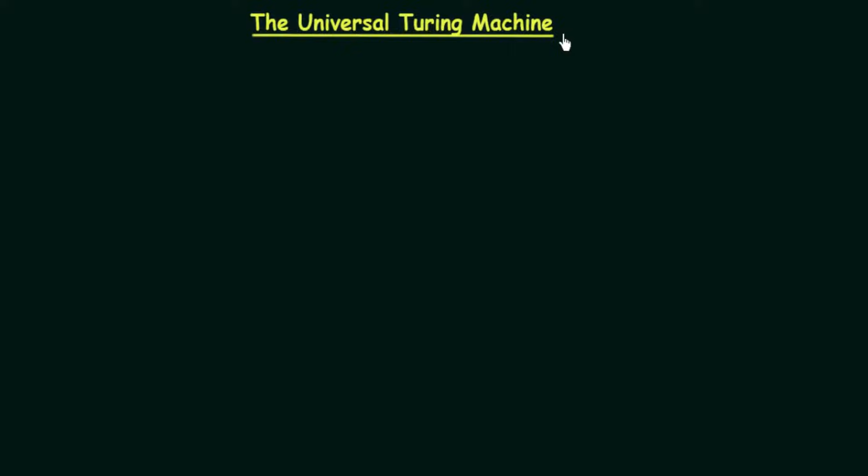In the previous lecture we have been studying about decidability and undecidability, and with that we must have got a brief idea about what undecidability actually means. Before we proceed to more problems of undecidability, there is an important topic that we need to discuss, which is the universal Turing machine. In this lecture we will try to understand what is this universal Turing machine, what it does, and why we need this.